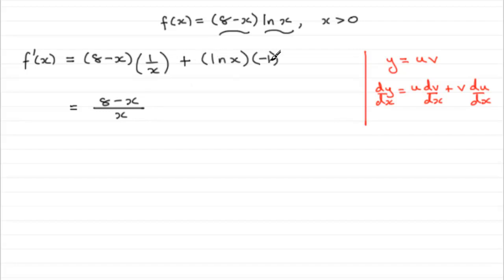And this term, well we've got a minus minus here over the plus, so that's going to be minus the natural log of x. So there you go. That's f dash of x then.